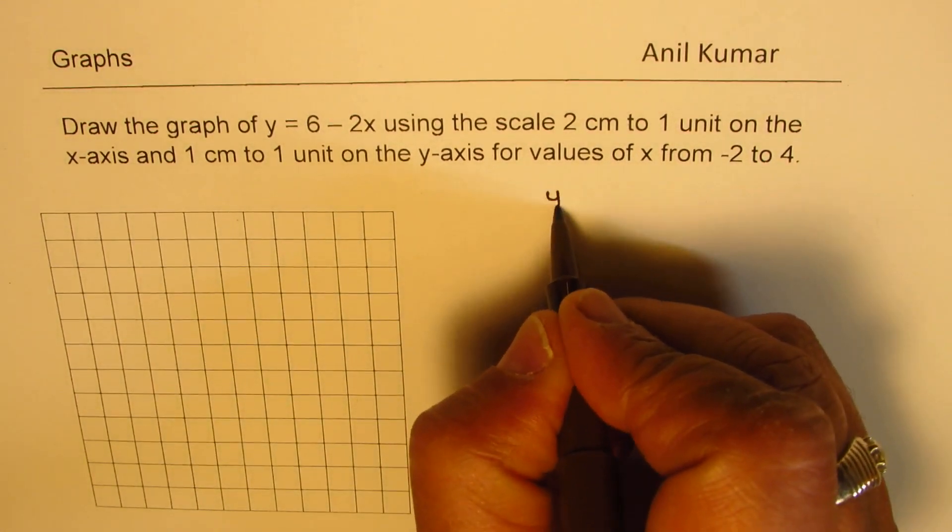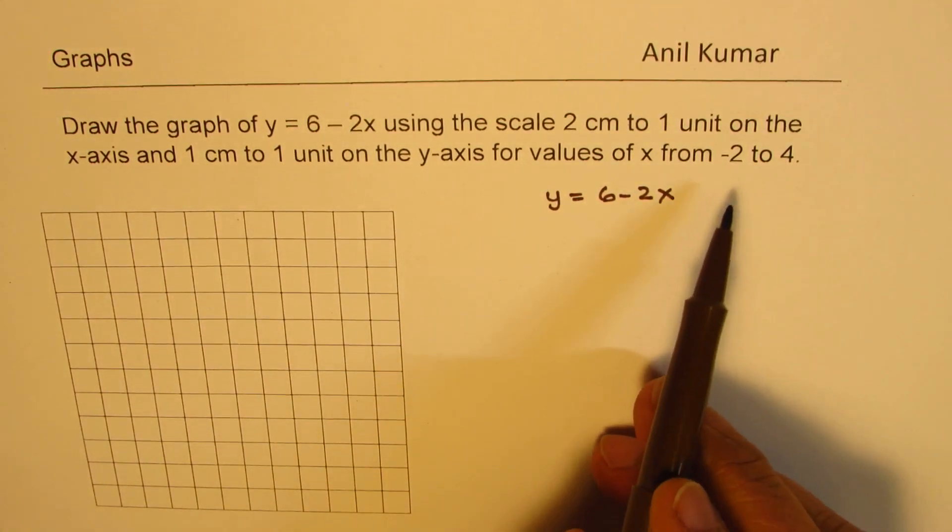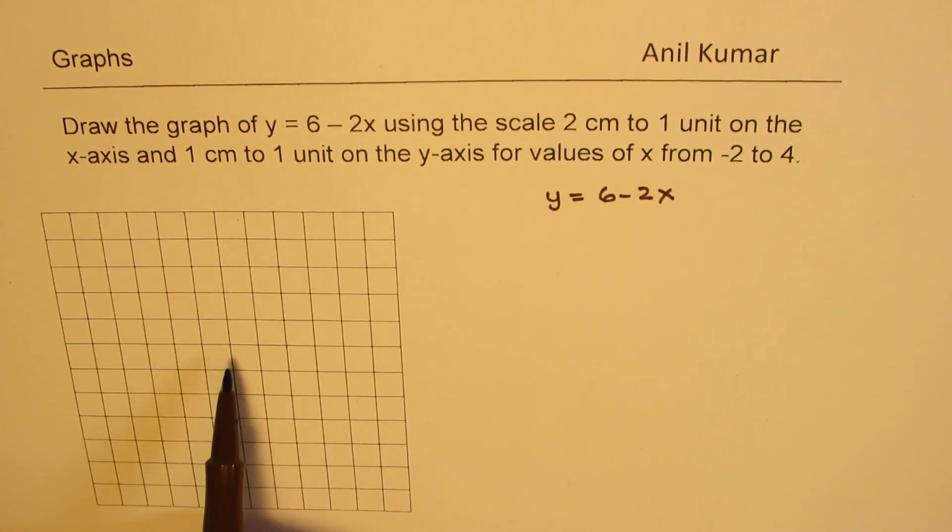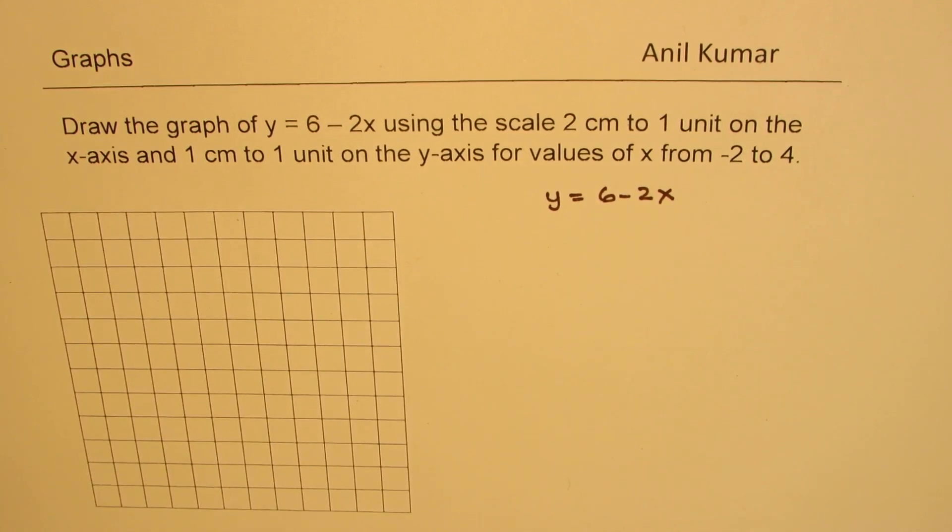So we are given the equation, which is y equals 6 minus 2x. And we are also given the values of x, for which we need to plot the points on the Cartesian plane and then join them to draw the graph.